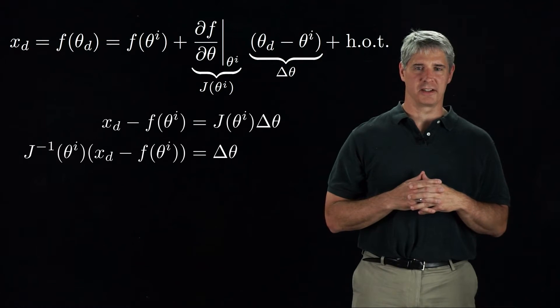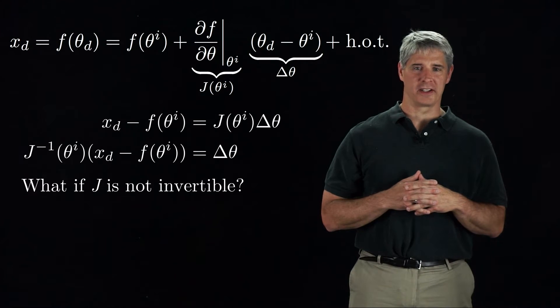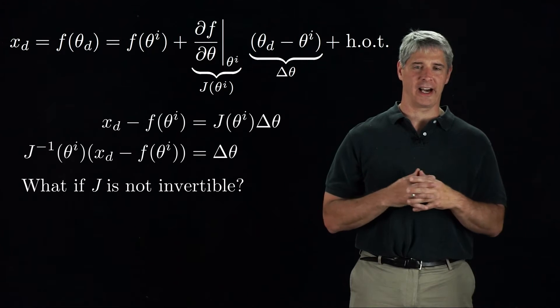Of course, this only works if J is invertible. If J is not invertible because it is not square or because the robot is at a singularity, we need a different way to calculate delta-theta.